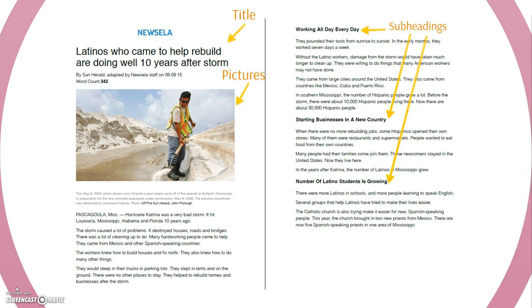So I'm going to read the first paragraph. 'Pascagoula, Miss. Hurricane Katrina was a very bad storm. It hit Louisiana, Mississippi, Alabama, and Florida 10 years ago. The storm caused a lot of problems. It destroyed houses, roads, and bridges. There was a lot of cleaning up to do. Many hardworking people came to help. They came from Mexico and other Spanish-speaking countries.' This first paragraph gives me a lot of information. Now I know the storm was in a certain part of the United States, it was called Hurricane Katrina, and I now have a guess about who Latinos are — people who came from Mexico and other Spanish-speaking countries.